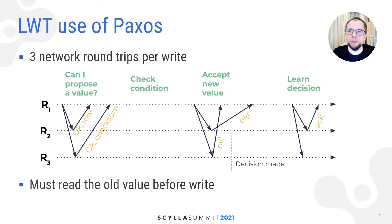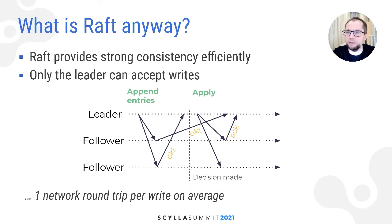An important property of LWT is that it works over existing tables and alongside existing eventually consistent writes. This comes at a fairly high cost of implementation. The overhead on the rest of the database when LWT is used is zero. Back in 2019, we also mentioned that we are going to provide an optimized implementation of LWT which is based on Raft. In this talk, I will discuss our progress with Raft and what else we plan to deliver using it. So what is Raft anyway? It's a leader-based log replication protocol.